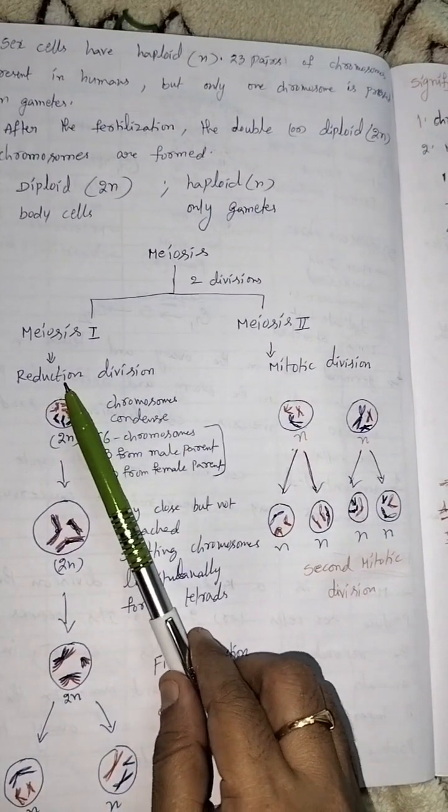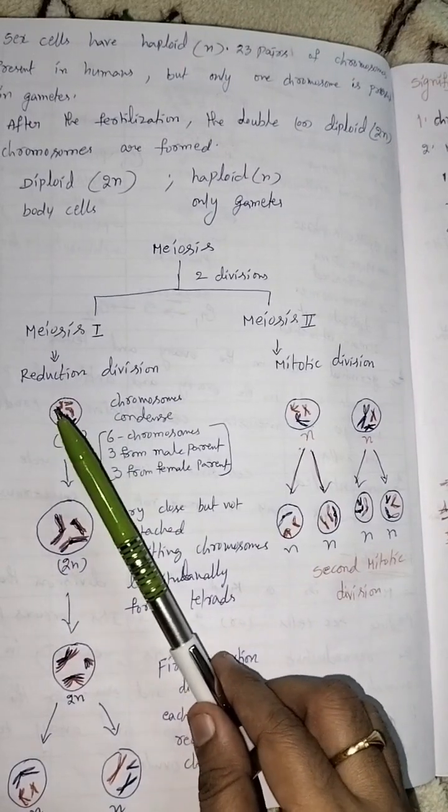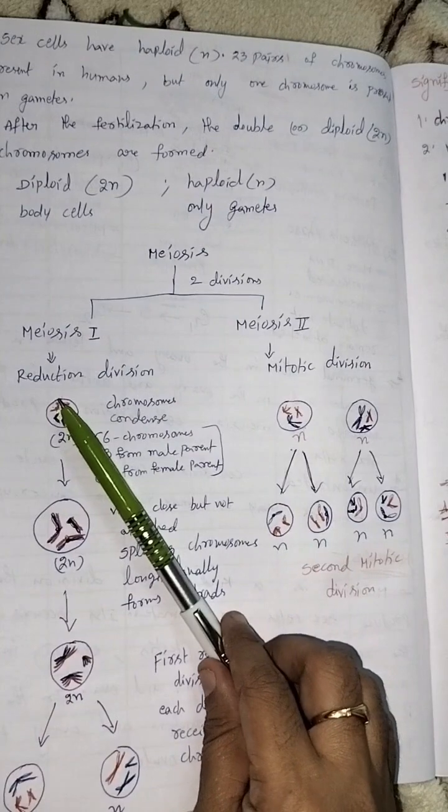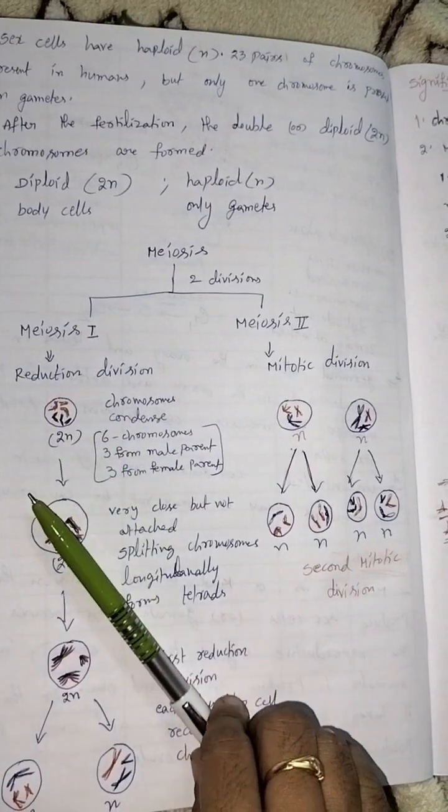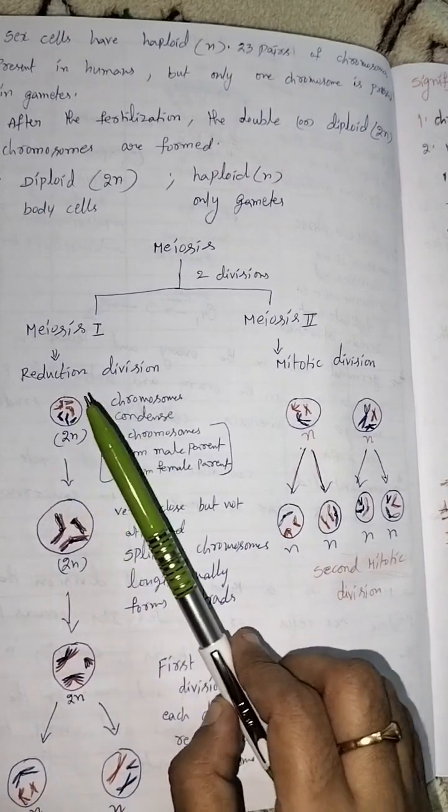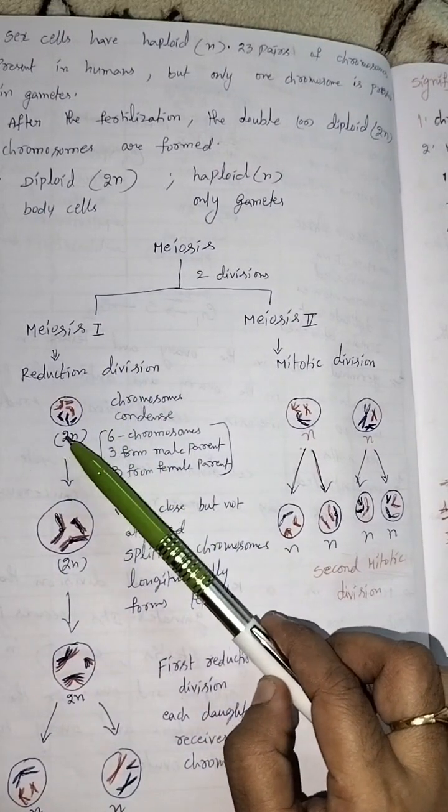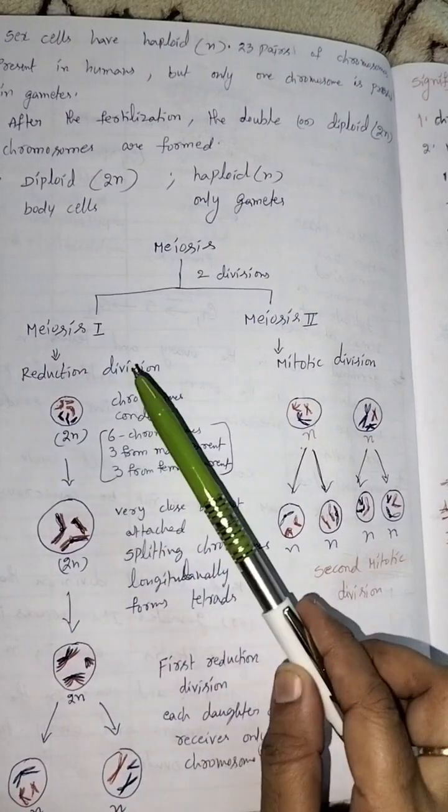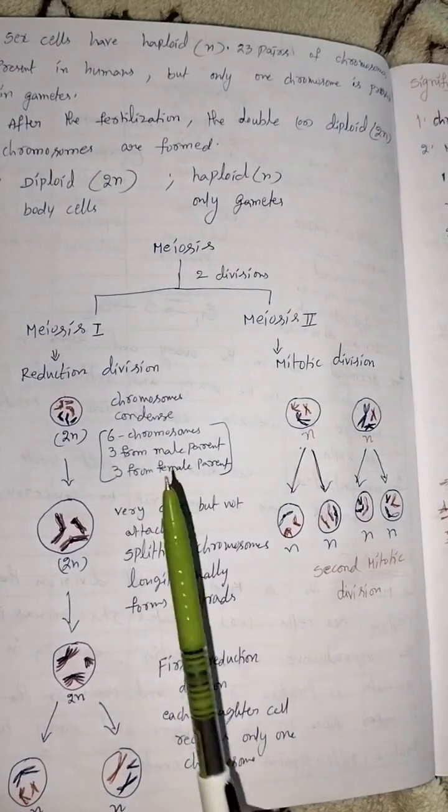Reduction means decreasing of the chromosomes. It forms N chromosomes from 2N. In meiosis 1, the 2N chromosomes form N chromosomes. So it is called reduction division.